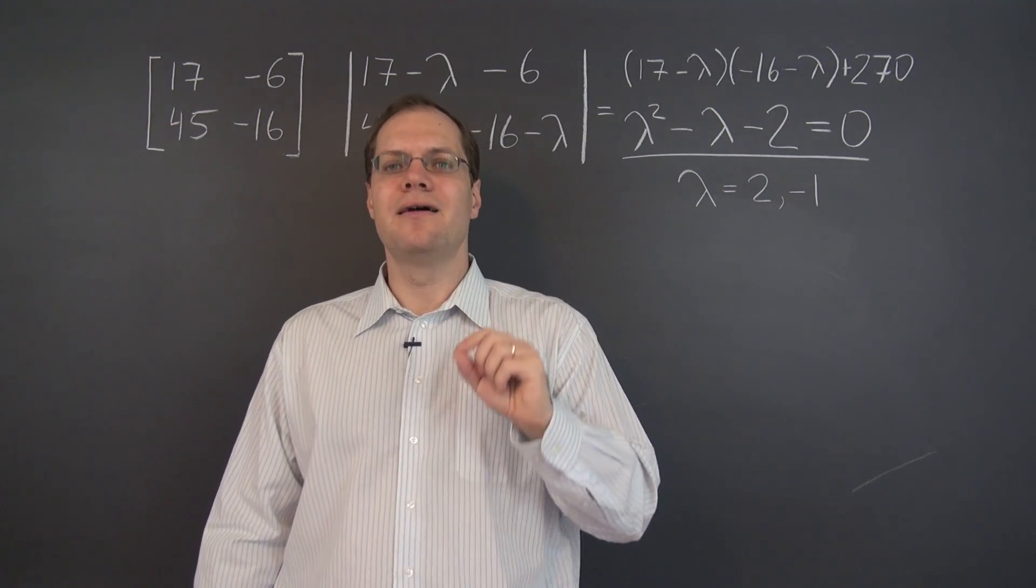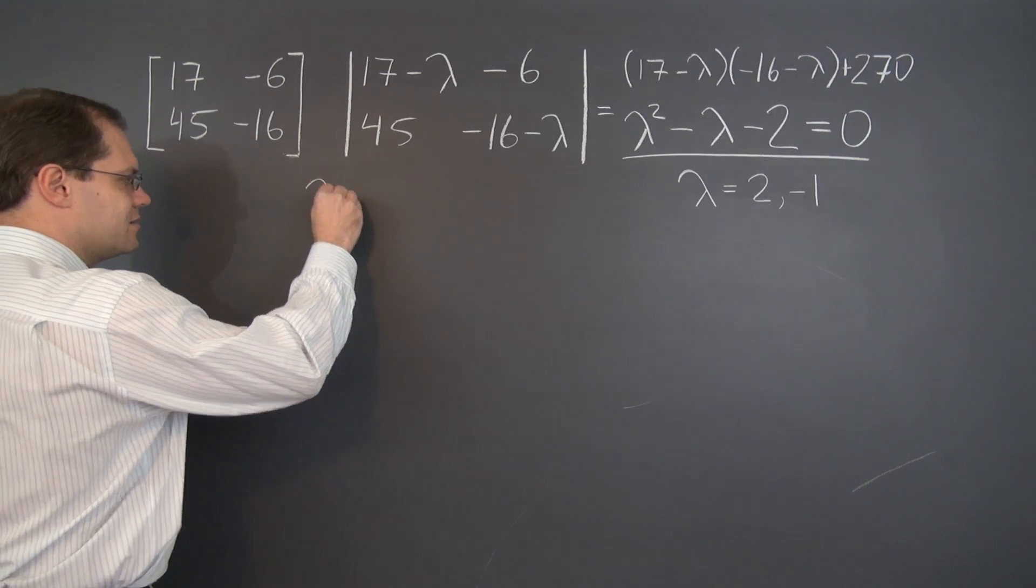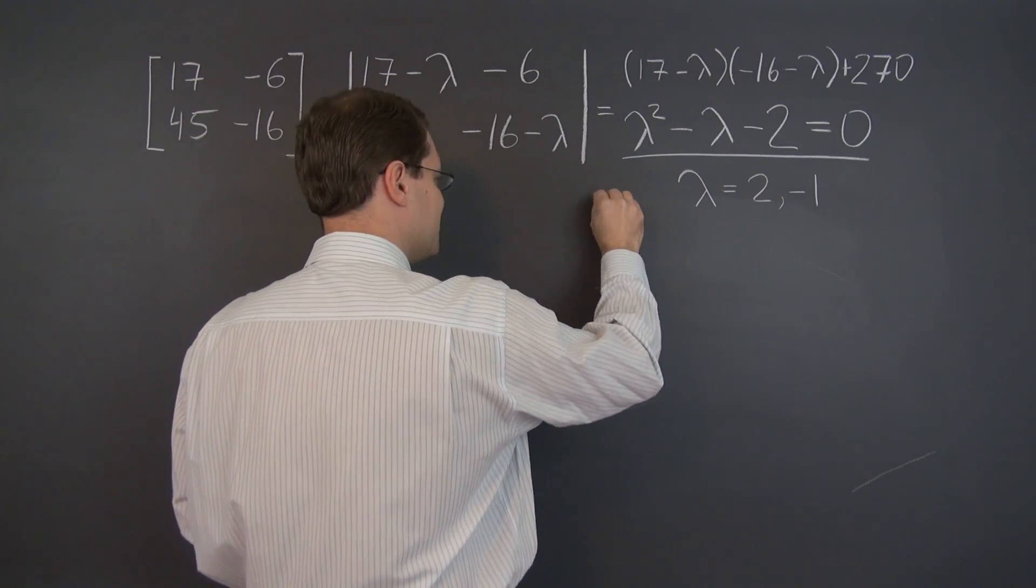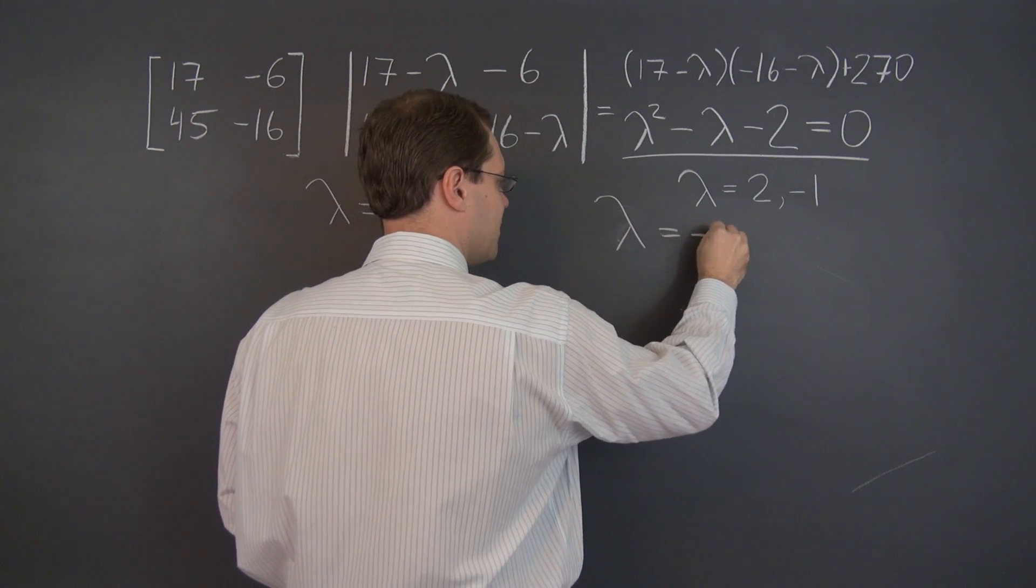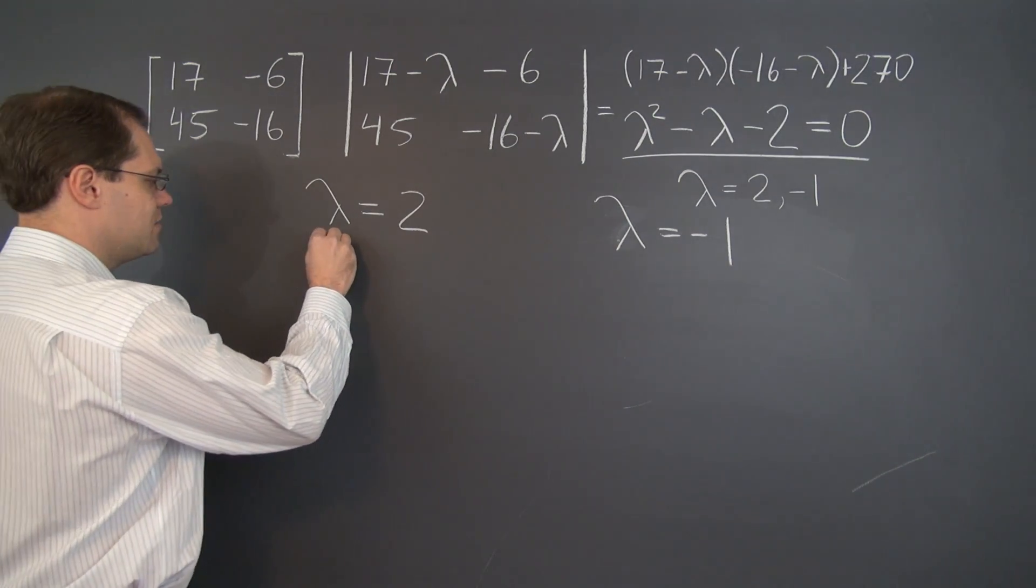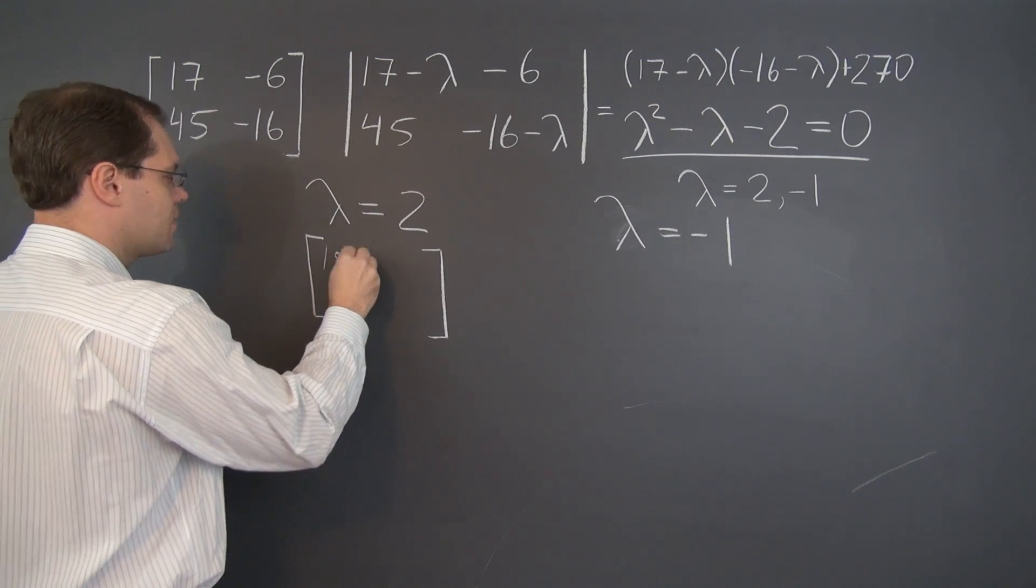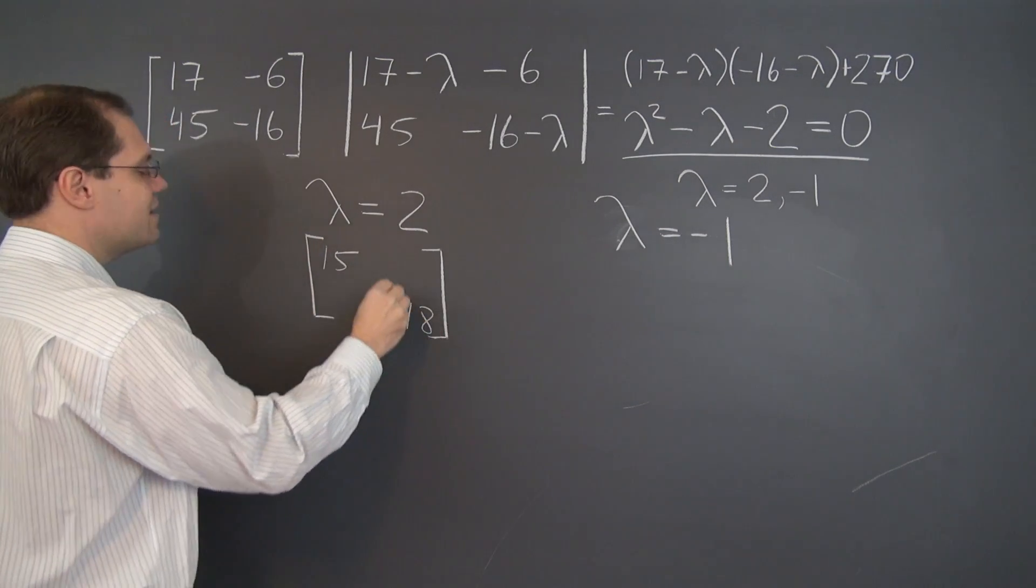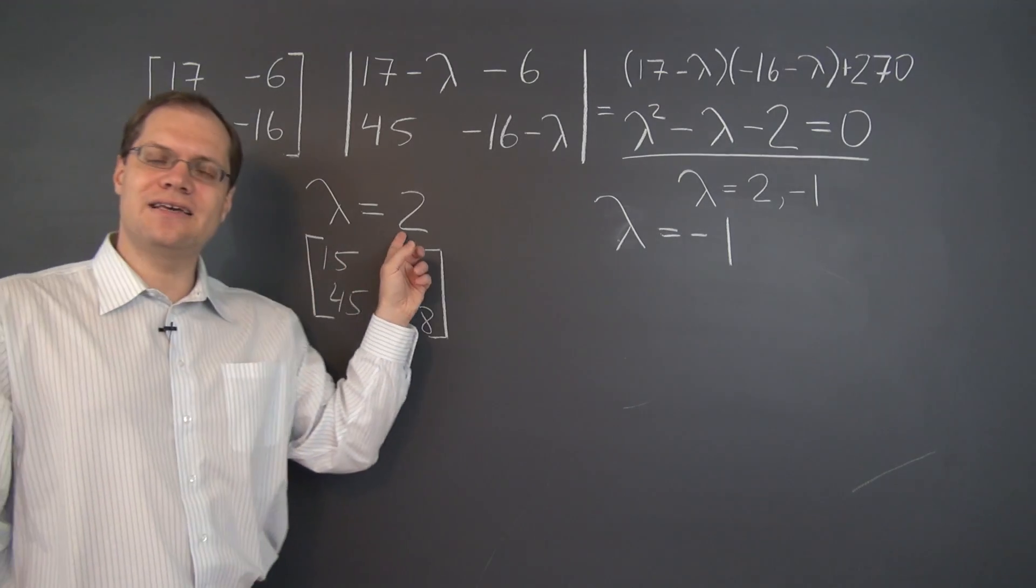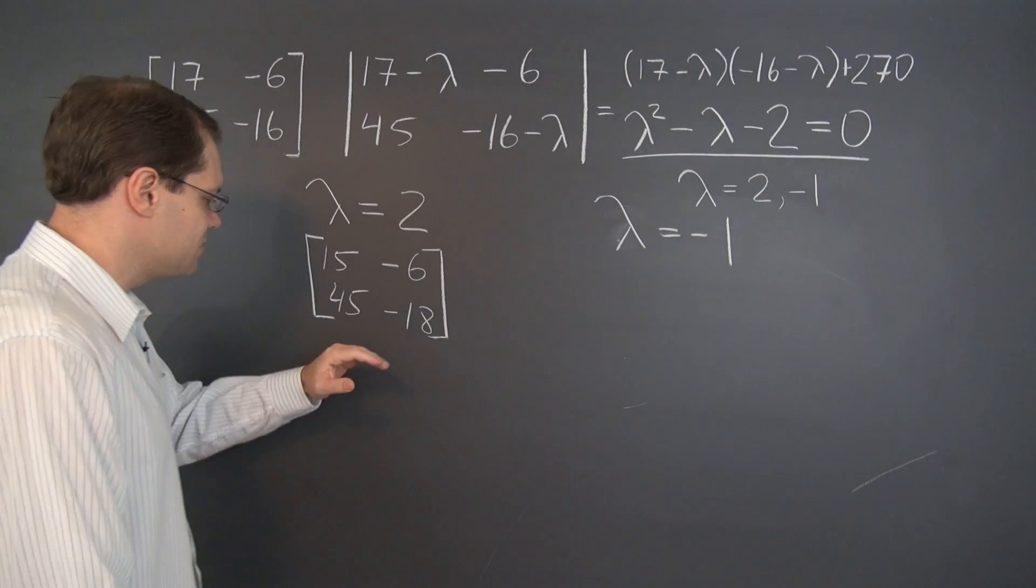Let's find the corresponding eigenvectors. And the way we do it is by subtracting the eigenvalue from the diagonal. So here's where we'll deal with one of them. Here's where we'll deal with the other, minus 1. Dealing with the one that equals 2 first. Subtracting 2 from the diagonal leaves us with 15 and negative 18. And the rest of the entries are unchanged: negative 6, 45.